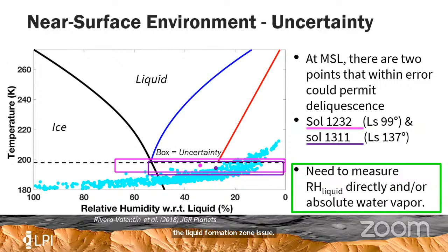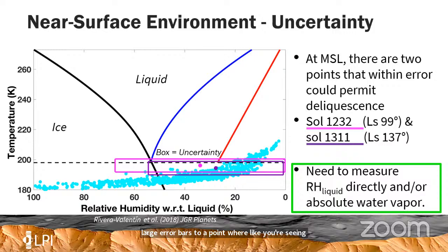Once you take those data from relative humidity with respect to ice and actually translate it over to with respect to liquid, and propagate all of that error, you have really large error bars — to the point where we have the error box represented by the magenta box and the purple box over two data points, which within error would allow for liquid formation.